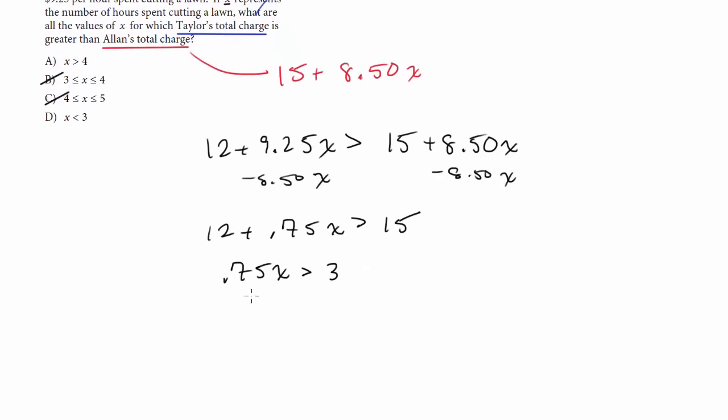And now I'm going to divide both sides by 0.75. We don't have a calculator here. So to make it a little bit easier, I'm going to make this 3 quarters X and then multiply both sides by 4 thirds. Just a little bit of a manipulation to just make the math a little bit easier. And when I do that, this cancels, I get X is greater than 4. And that's going to be choice A and that's the answer.